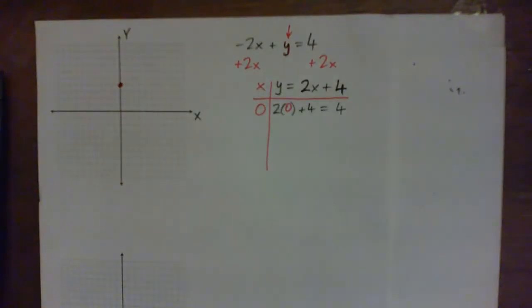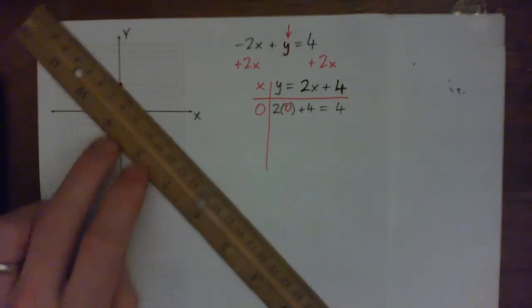All right, so we've done most of it now. That's most of the work, and now all we need to do is find some more points and then draw a line, and I actually have a ruler today. Draw a line with a ruler, right?